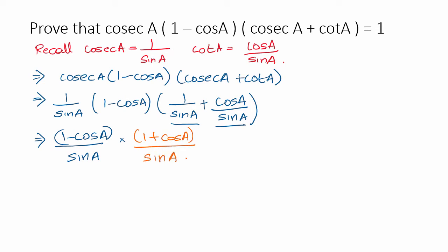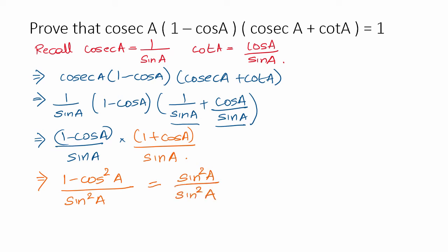So, (1 minus cos A) multiplied by (1 plus cos A) gives us 1 minus cos² A, using the identity (a + b)(a − b) = a² − b². The denominator becomes sin A times sin A, which is sin² A. This gives us sin² A divided by sin² A.